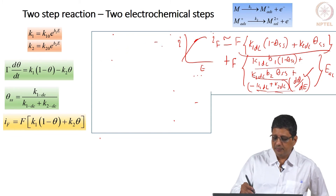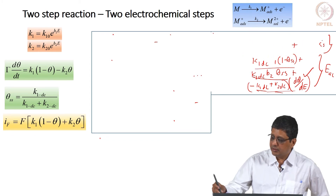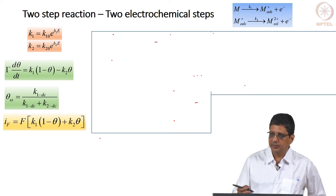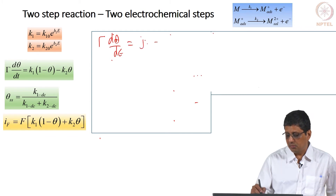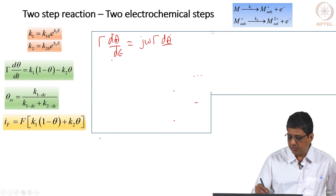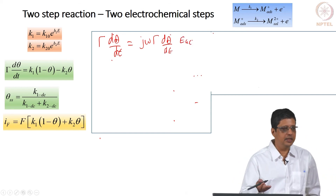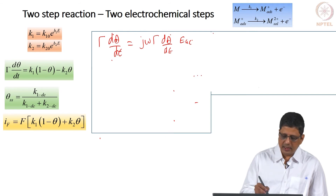We will come back to that point later when we compare different methods. For now, I would like you to get d(theta)/dE by taking the mass balance equation. When you expand in Taylor series, in the last example k2 was a constant — I cannot do that here. So I will take the mass balance and write: gamma · d(theta)/dt is j·omega·gamma · d(theta)/dE · E_AC. Because d(theta)/dt = d(theta)/dE · dE/dt = d(theta)/dE · j·omega·E_AC.